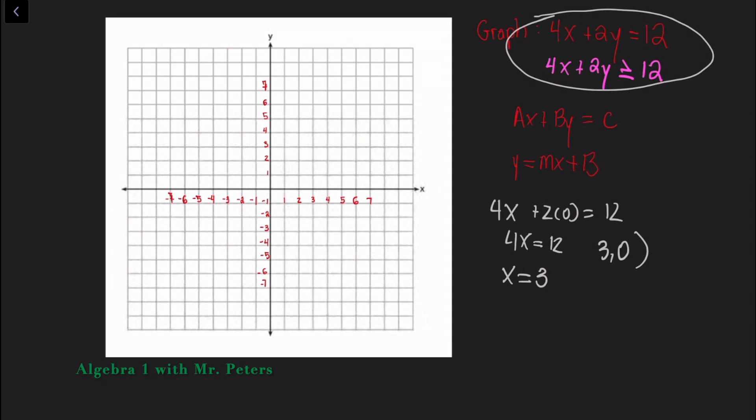So that point is going to be at 3, 0. Let's put a point on the graph. Now let's say I go back and I do the same thing for my y. So now I have 4 times 0 plus 2y is equal to 12. 2y is equal to 12, that means y is equal to 6. My coordinate is 0, 6.